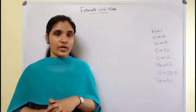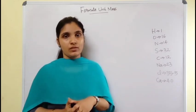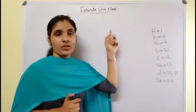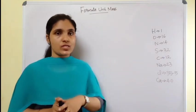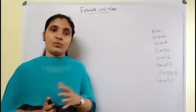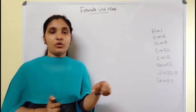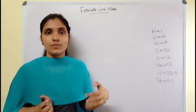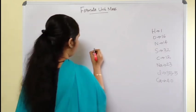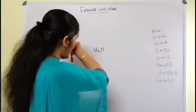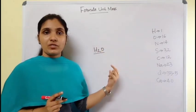Welcome back to another session on atoms and molecules. Today we will see the topic of formula unit mass — how to calculate molecular mass or formula unit mass. Formula mass means it is the sum total of atomic masses of all the atoms present in a given formula. For example, if we write water's formula as H₂O, we can find its formula unit mass.